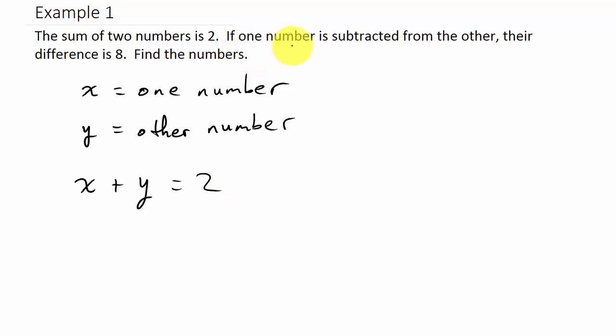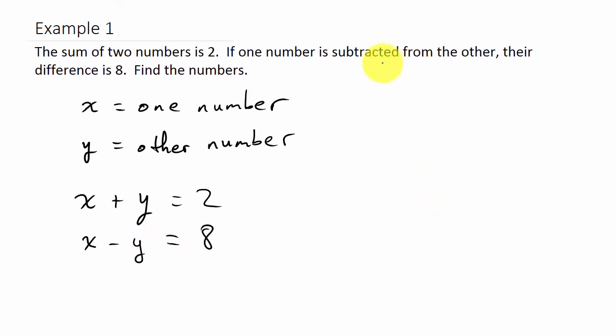And then it says if one number is subtracted from the other. So one number is subtracted from the other. I mean it doesn't really matter how you do this, I could write x minus y equals eight. But you know, it does say if one number is subtracted from the other, so if you want to just really get technical about it, we can say this number is subtracted from this one. So this one number here is subtracted from this one, so I would have y minus x. And let me show you, and look, if you left it x minus y, you're going to get the right answer too.